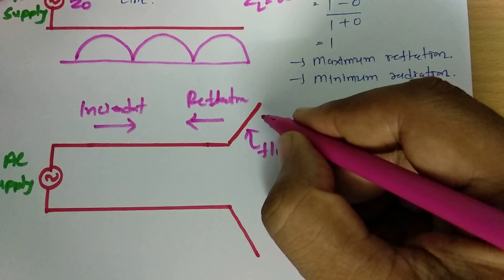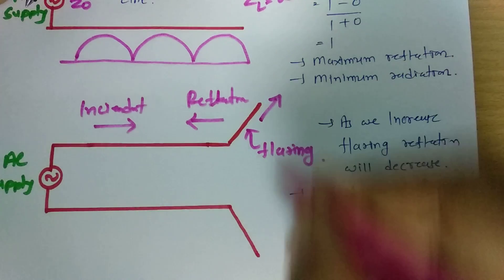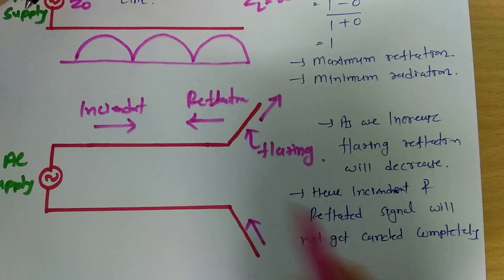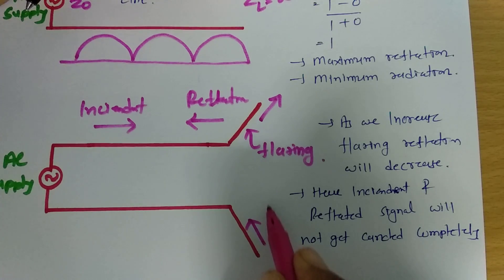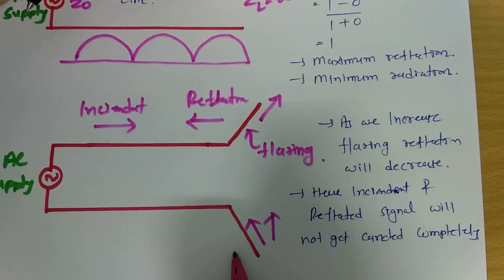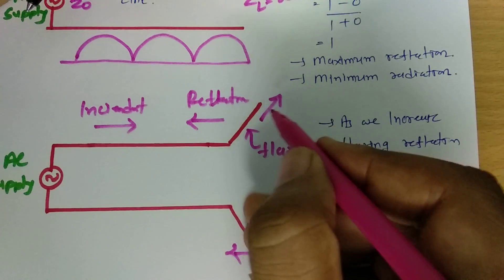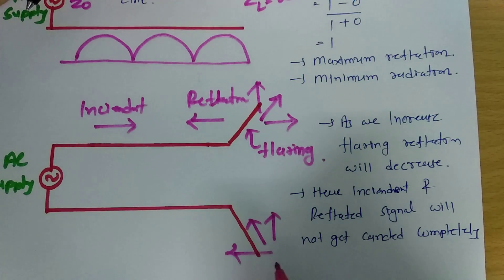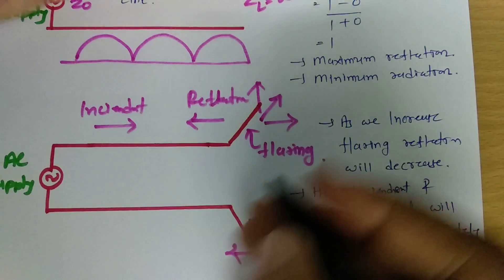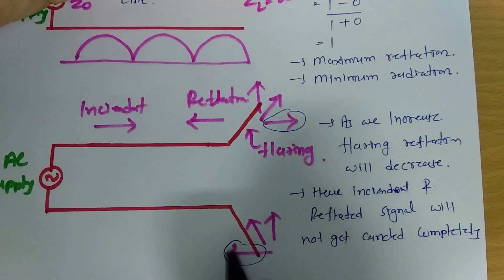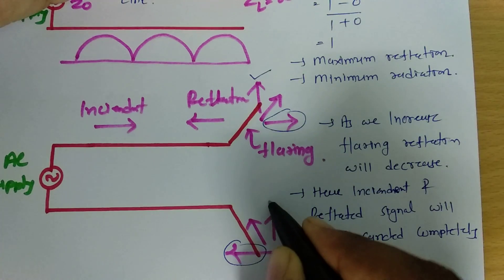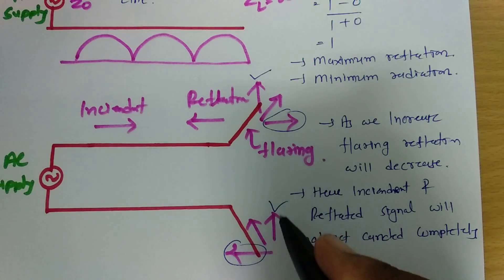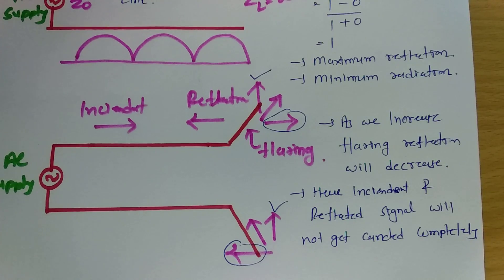For example, if the current is maximum in this direction, then at this end the current will enter inside. Looking at the basic portion, the current has two components — one in this direction and one in this other direction. One component gets cancelled, but these two remaining components get added to each other, so the signal is not cancelled completely and gets partially radiated.